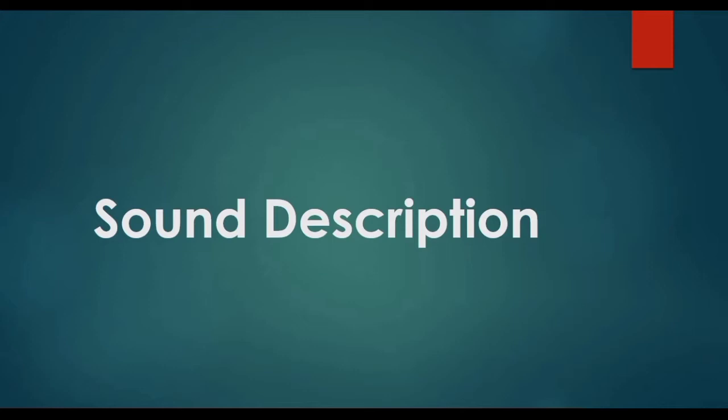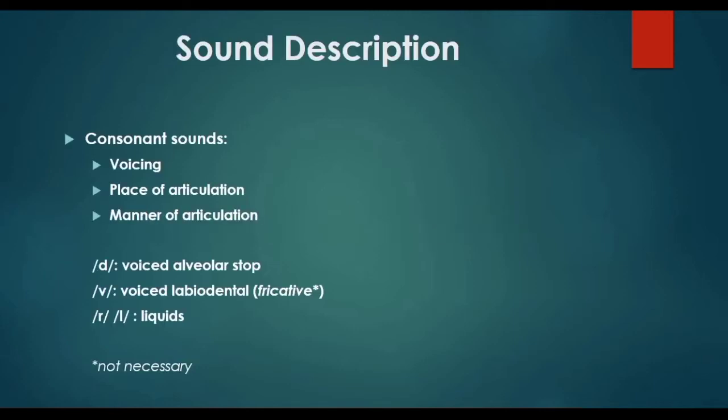Remember that consonant sounds are those that are produced by a complete or a partial obstruction of the airstream in the oral cavity. On the other hand, the vowel sounds are those in which the airstream is relatively unobstructed in the oral cavity. The vowel sounds of English are classified according to height, but we are going to see that later. Now we are going to concentrate on consonant sounds.